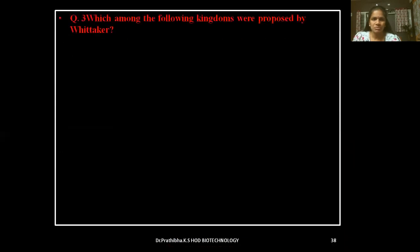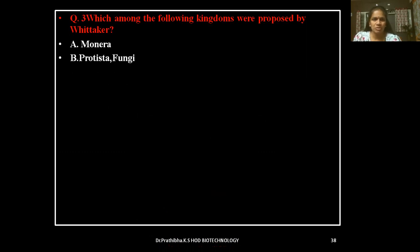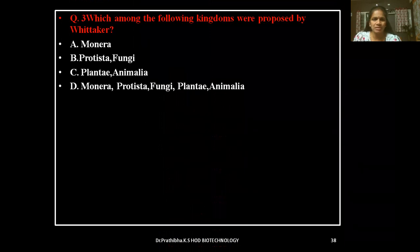Question 3: Which among the following kingdoms were proposed by Whittaker? Options: Monera, Protista, Fungi, Plantae, Animalia — listed as multiple choice variations.